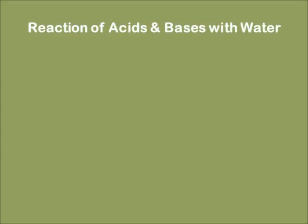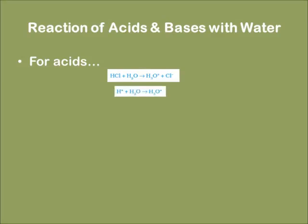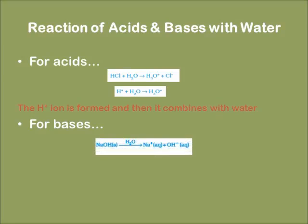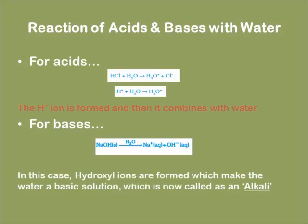The reaction of an acid and a base with water: in the case of an acid, when it reacts with water, the hydrogen ion H⁺ gets formed and immediately combines with water to form H₃O⁺. Whereas in the case of a base, when a base reacts with water, we get hydroxyl ions — OH⁻ ions. These OH⁻ ions go into the water and make it a basic solution, which is now known as an alkali.